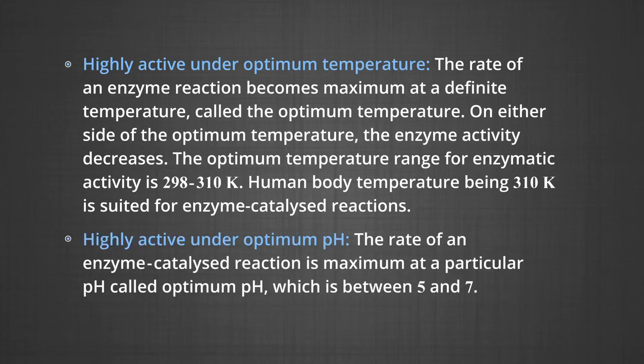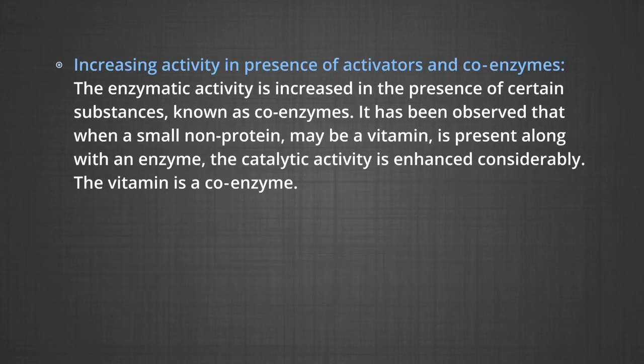Number four, highly active under optimum pH. The rate of an enzyme catalyzed reaction is maximum at a particular pH called optimum pH, which is normally between 5 and 7. Number five, increasing activity in presence of activators and coenzymes. The enzymatic activity is increased in presence of certain substances known as coenzymes. When a small non-protein molecule, maybe a vitamin, is present along with an enzyme, the catalytic activity is enhanced considerably. Thus, the vitamin is a coenzyme.